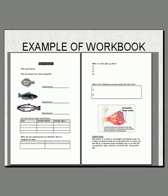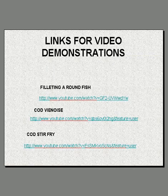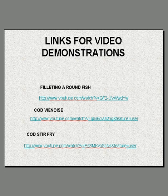Here's an example of the workbook — very simple, all laid out for them. That workbook follows along closely with the PowerPoint. We will be giving this out in DVD form as well as over Blackboard. And this will be an example of the digital format: links for filleting round fish, cod Viennoise, and cod stir fry — just two of the dishes they have to complete — with demonstrations available on that platform.